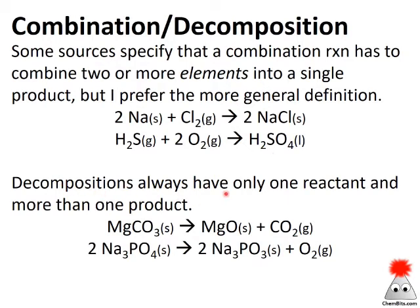Decompositions similarly only have the one reactant and more than one product, and those can be broken down to elements or to molecules and other formulas. So a couple of quick examples down here. Magnesium carbonate decomposes on heating to form magnesium oxide and carbon dioxide gas. That's actually a very important reaction in a number of settings.